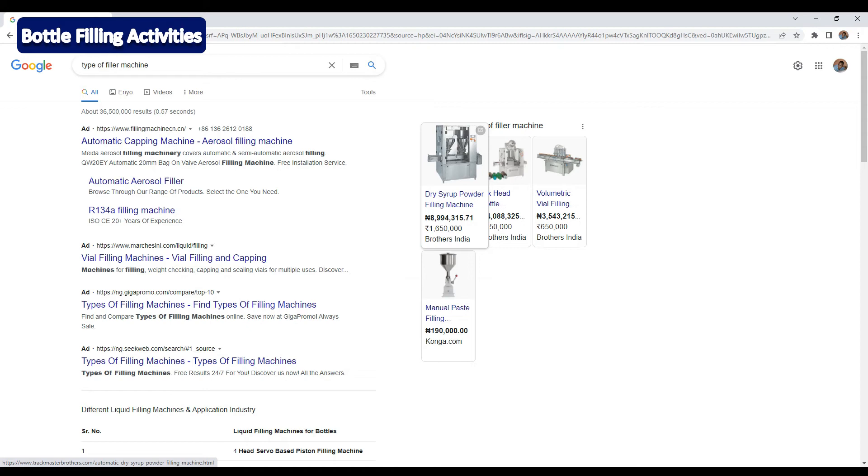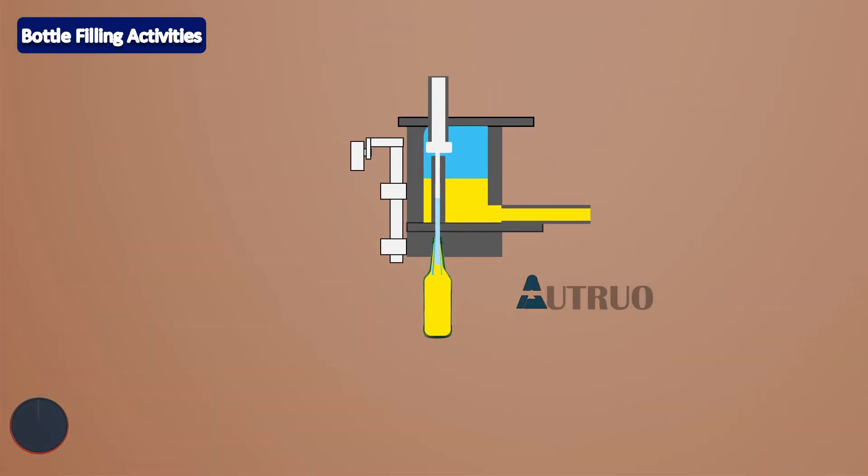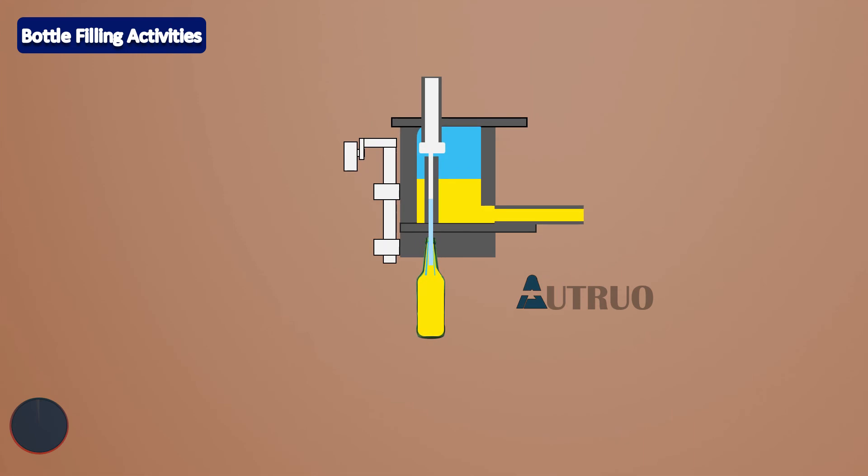Now let's look at the design of the filling block. What most machine designers normally do is to design a block that will allow the flow of air, CO2, and product. These holes and ports are now controlled by the PLC as the filler rotates.